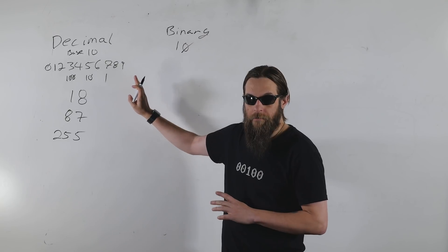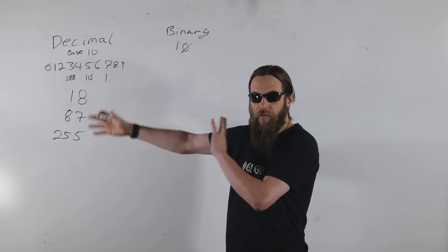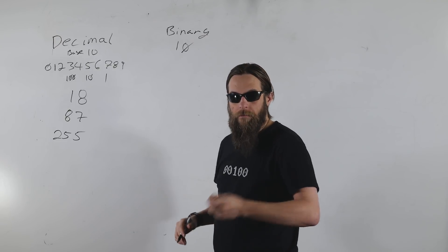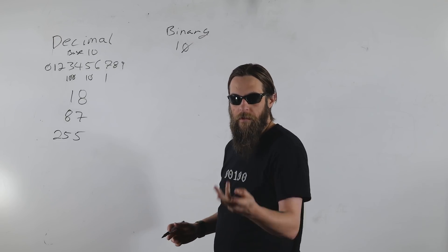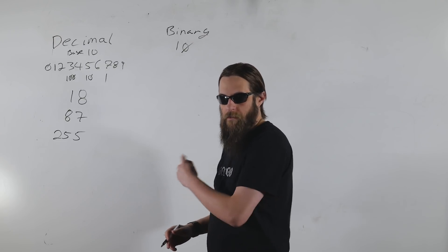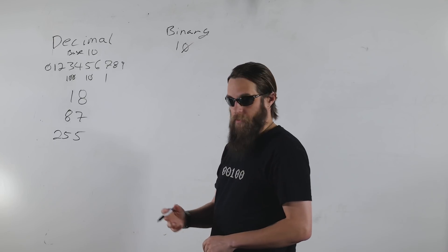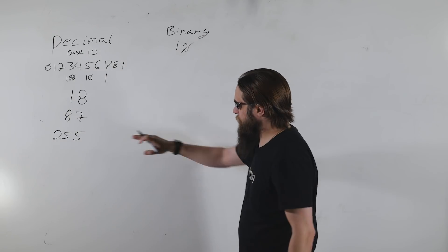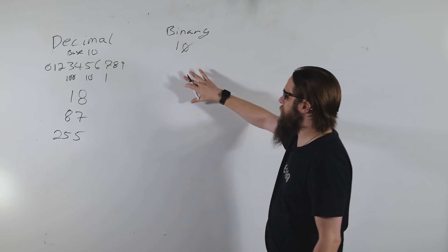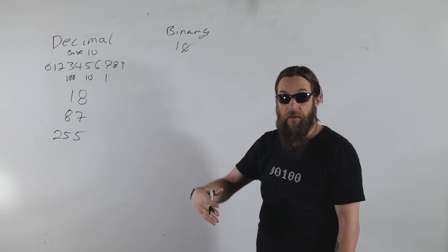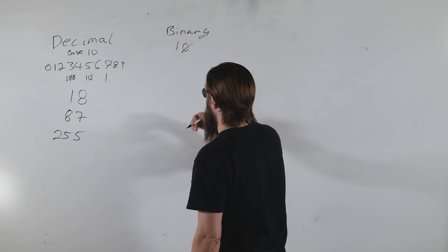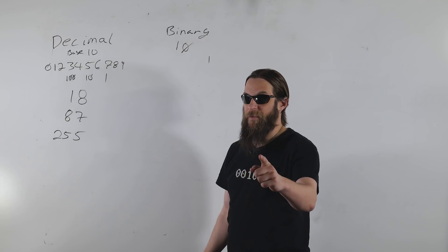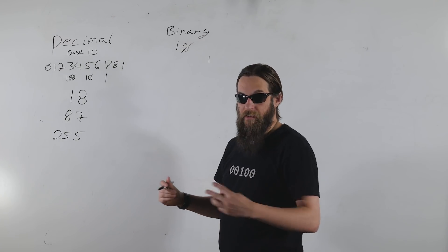It's on and off — zero and one, zero one zero one. To translate numbers into binary, we first have to understand the place value of binary.